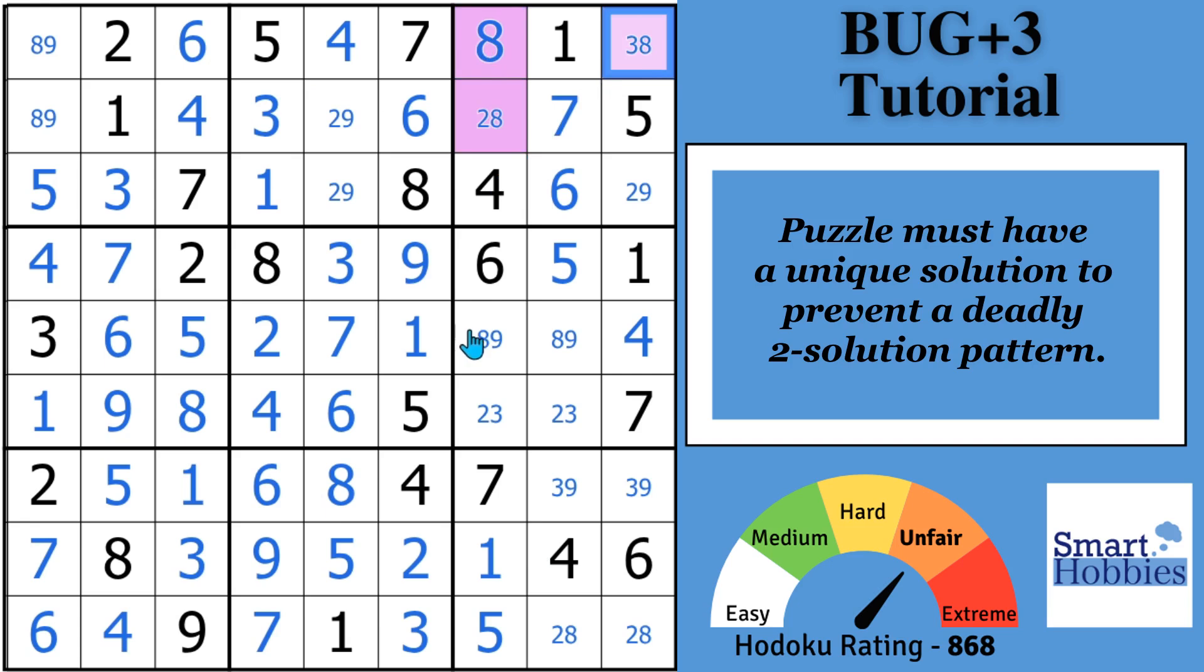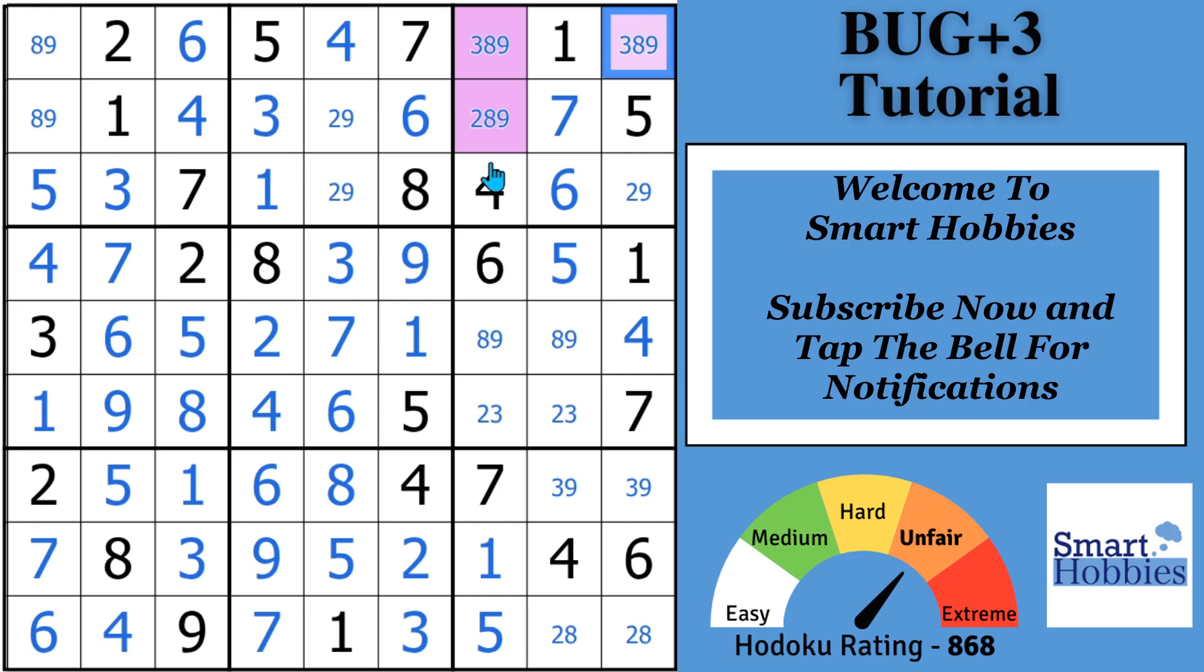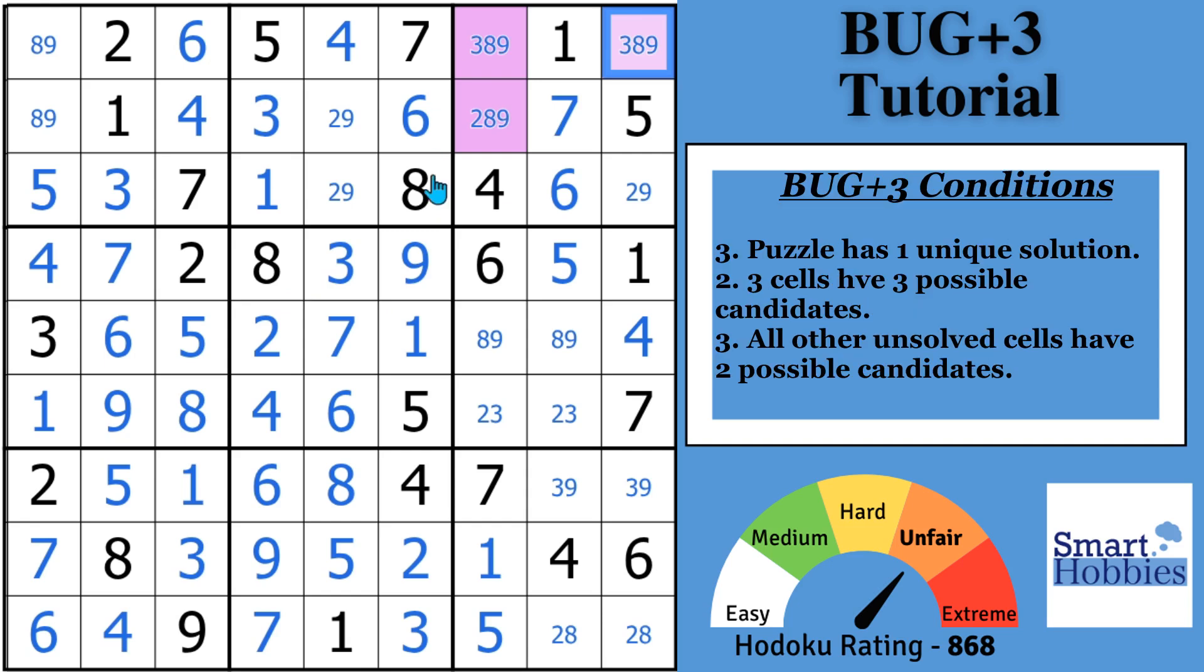Now BUG+2, I covered in my previous video, but a BUG+3, you have a situation where it's three cells like this. I've got to caution you, you don't solve it just as easily as a BUG+1. And if you're new to the channel, I think it's time to welcome you to Smart Hobbies. Subscribe if you want to turn your passing interest in Sudoku into a fun and enjoyable hobby.